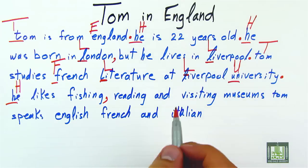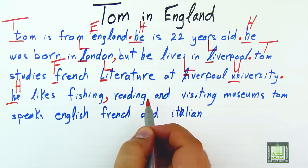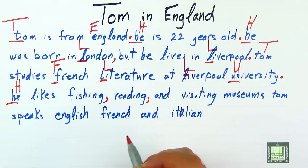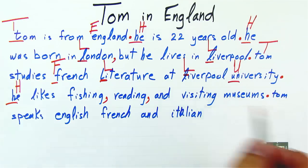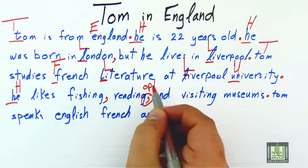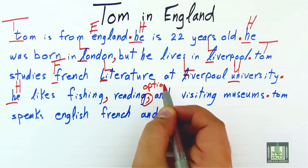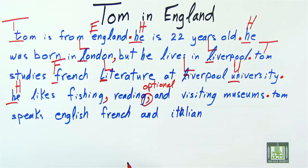He likes fishing, reading, and visiting museums. As you can see, here we are making a list of more than two things, so we have to set them off by using commas: fishing, reading, and visiting museums. And we have a full stop. Of course, you know that the Oxford comma is optional, so you can use it or you can do without it.